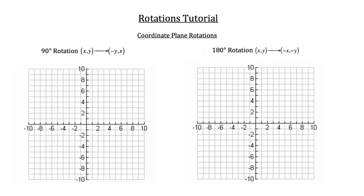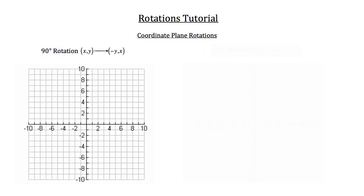I'm going to teach you how to do a 90 degree rotation first, and then we'll move on to the 180 degree rotation. In order to show you how to do a 90 degree rotation, I'm going to bring in a figure — the diamond-shaped figure here, which is rhombus W, X, Y, Z.